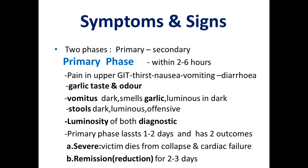Symptoms and signs of acute phosphorus poisoning occur in two phases — primary and secondary. Primary phase starts within two to six hours: there is pain in the upper GIT, thirst, nausea, vomiting, diarrhea, garlic taste and odour. The vomitus is dark and smells of garlic; both vomitus and stools are luminous in the dark — this luminosity is diagnostic. The primary phase lasts one to two days and has two outcomes: severe (victim dies from collapse and cardiac failure) or remission (reduction in symptoms for two to three days).